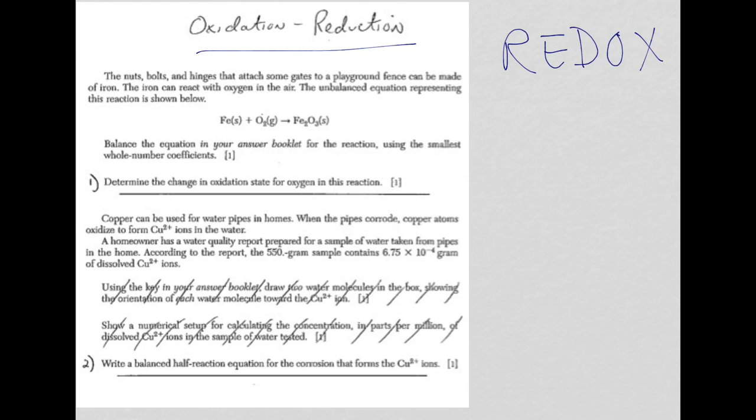So, in this first question, you're asked to determine the change in oxidation state for oxygen in the reaction that's given above. So, let's take a look. Any element, when it's by itself, even a diatomic, is assigned an oxidation number of zero. So, in the case of O2, it would be zero.